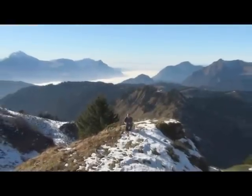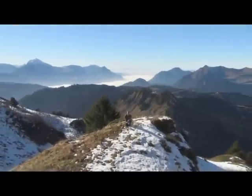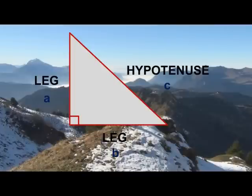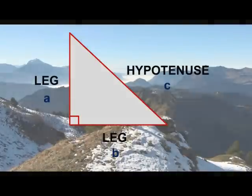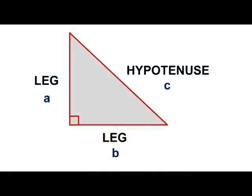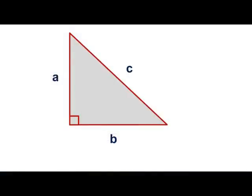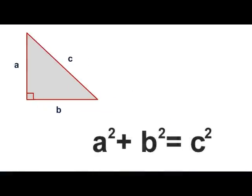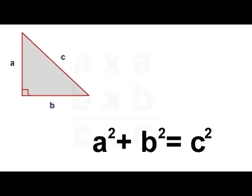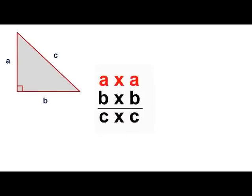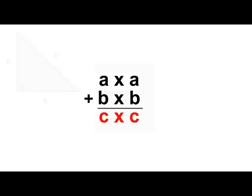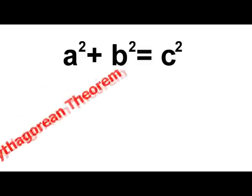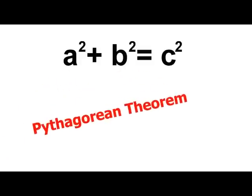Now let's take a look at the Pythagorean Theorem. If we use the letters A and B to represent the legs, and C to represent the hypotenuse, we can write an equation that looks like this: A squared plus B squared equals C squared. This means that if we square the length of A and square the length of B and then add them together, they will equal the square of the length of C. The Pythagorean Theorem.